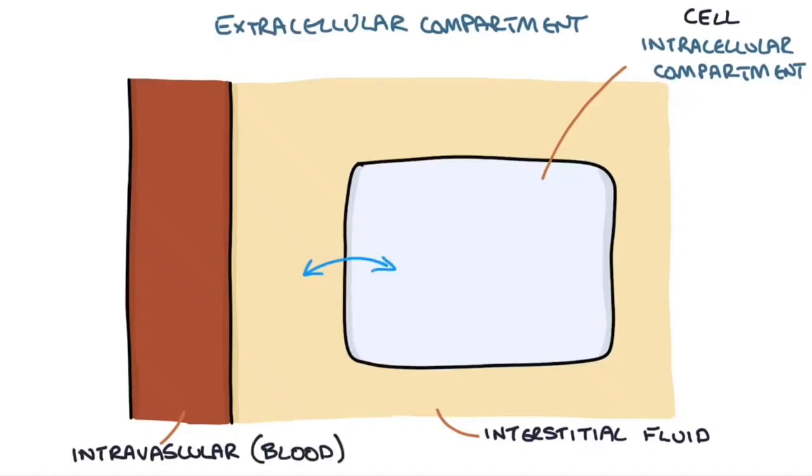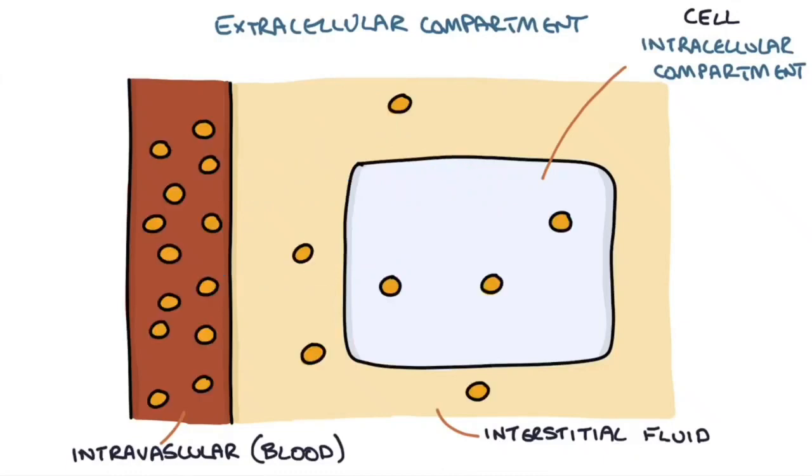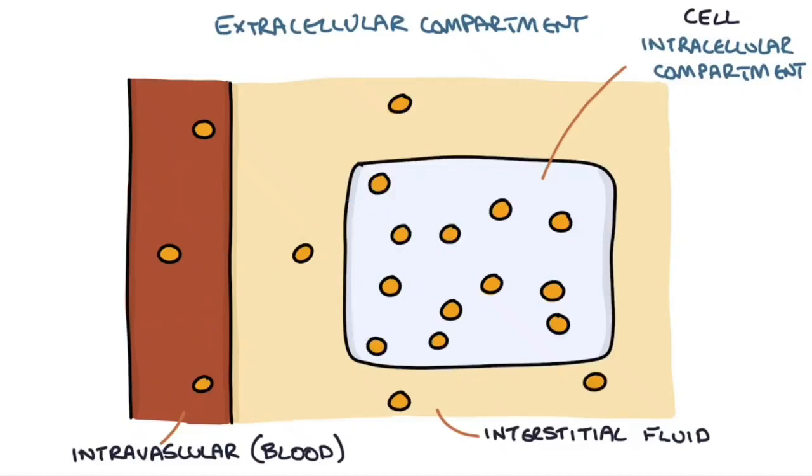Water is free to move between these different compartments in a process called osmosis. This is where water molecules move from a place of low osmolality, a low concentration of solutes, to a place of high concentration of solutes. For example, if there's more sodium in the blood, water will move out of the cells and the interstitial fluid and flow into the blood. If there's a lot of sodium in the cell, the water will flow out of the blood and the interstitial fluid and into the cells. This way, the water movement balances out the osmolarity across the different spaces.